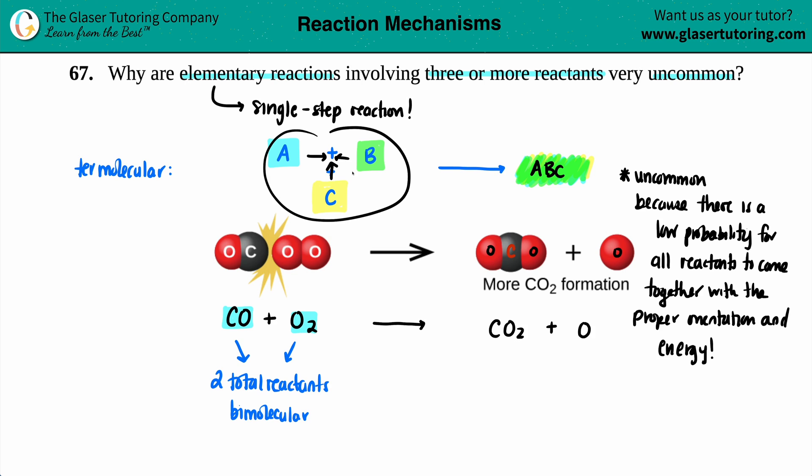So that's the answer for this one. The more reactants that you involve on an elementary step, a one single step reaction, it's not really probable that all three of these are going to be in their perfect orientation and have enough energy to make that product.